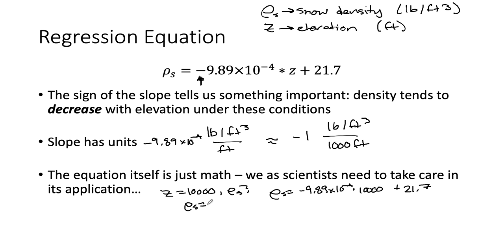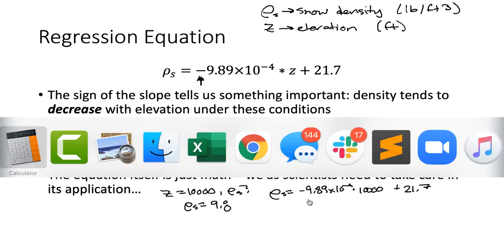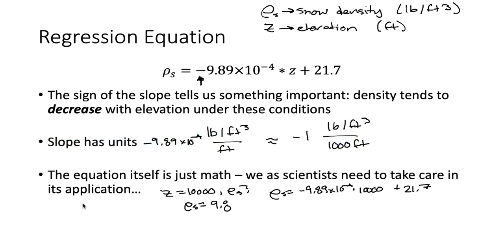11.8 pounds per cubic feet at 10,000 feet. So this is kind of cool because this now gives us an expectation. If we were to go to a location, at least again on that date that was at 10,000 feet and we took a snow sample, this might be a good prediction of what we would get for the snow density.